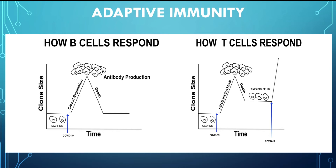When a virus like COVID-19 invades, some of the naive circulating B and T cells are activated to defend us against that particular virus. In the left diagram, the B cell clonally expands into a colony, meaning that a large number of identical cells are formed from a single B cell. Those cells then produce antibodies that are specific to COVID-19. The antibodies are usually formed to react with the spike protein of the virus, which then prevents entry of the virus into the non-infected cell, thus preventing further spread of the virus.